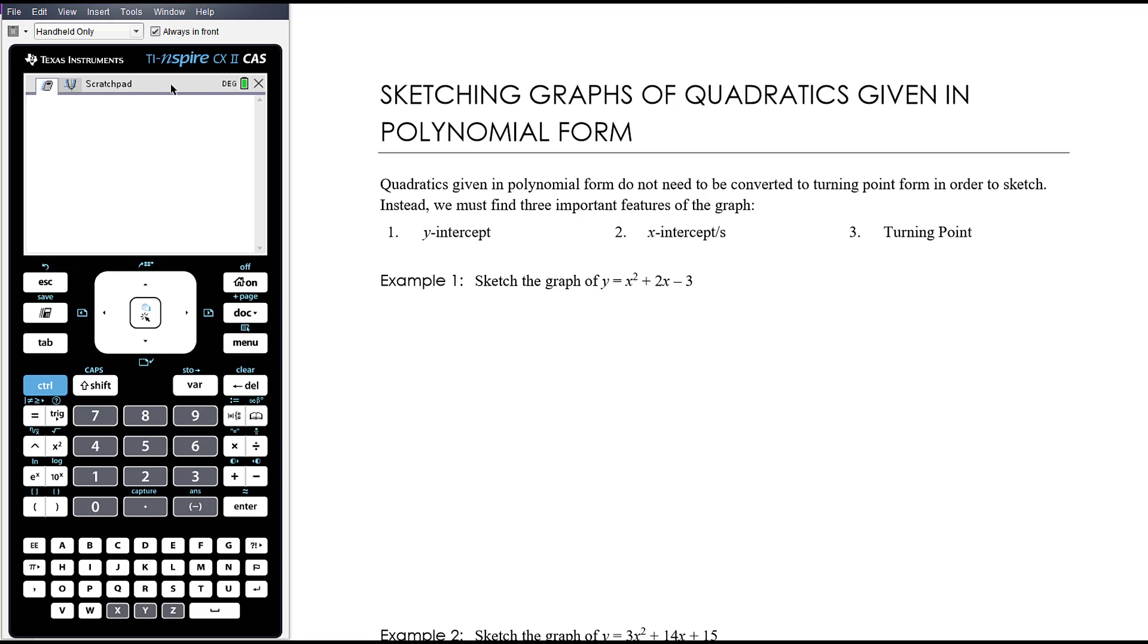Whereas turning point form we can immediately tell where the turning point is, the only thing we can immediately tell from this form is the y-intercept. It is the number on the end here, because when you let x equal 0, that will be 0, that will be 0, and you'll just get left with negative 3. We then want to calculate our x-intercepts, and from there, once we've got the x-intercepts, we'll think about the turning point.